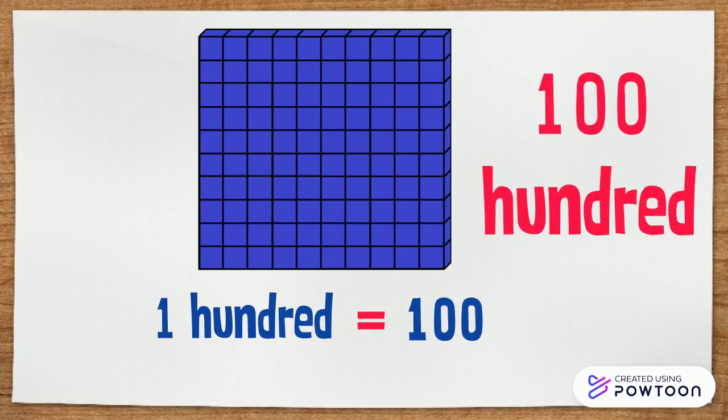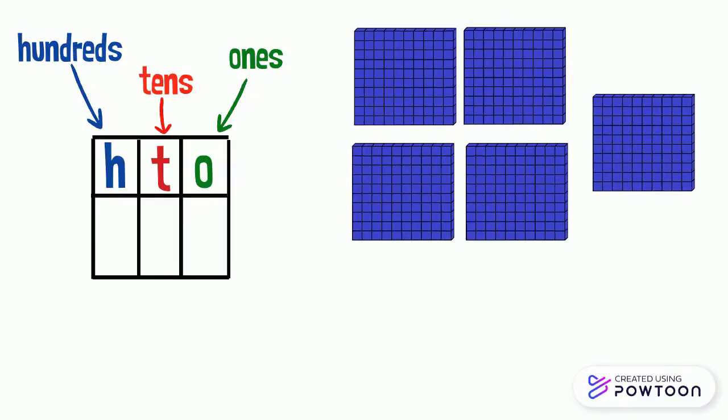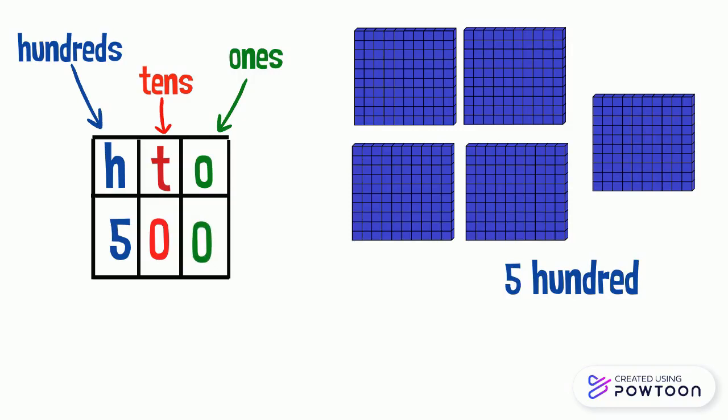One block of 100 equals 100. For 500, we will write 5 in the hundreds place, and since we don't have ones and tens, we will write 0 in each column. So the number is 500.